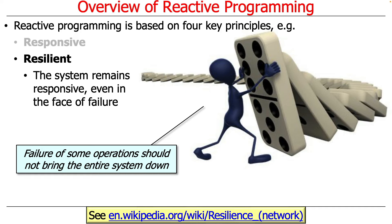Another important principle of reactive programming is resilience. You want the system to remain responsive even when things go wrong. Just because one computation fails shouldn't cause the entire system to come to a screeching halt. As we looked at with exception handling, you just want that particular operation to fail, not all the operations. The key point is you want your system to be resilient — nothing is more annoying than having one thing go down and everything stops.